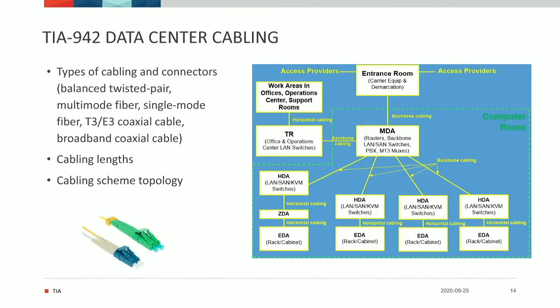TIA-942 is at its core a data center cabling infrastructure standard, and as I mentioned, we have a lot of things built on top of that. On the data center cabling portion, we provide information regarding the type of cables and connectors that are supported, the cabling lengths, and the topology. You can see a sample topology of a medium-sized data center on the right-hand side of the slide.